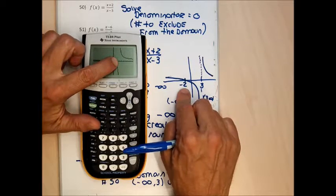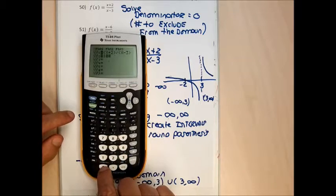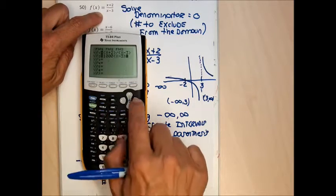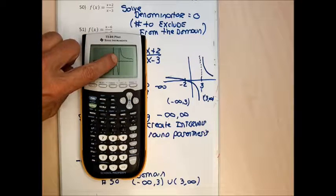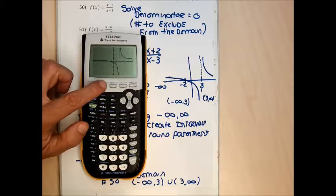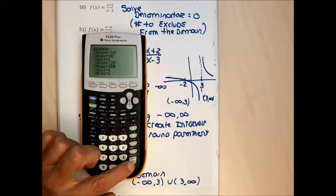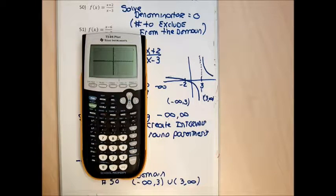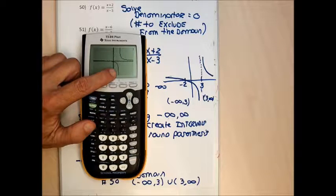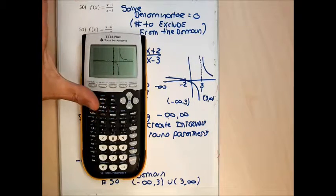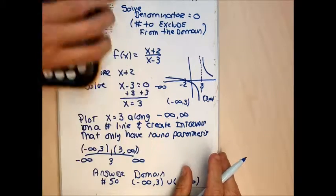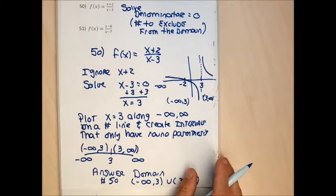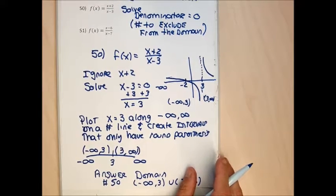I can draw the vertical asymptote more clearly on the calculator by multiplying the denominator by a thousand. You can see a vertical line through x=3, with the graph existing on both sides. If I make the y-window larger, you can see the graph gets super close to this line — but it will never touch it, always remaining just off that line.